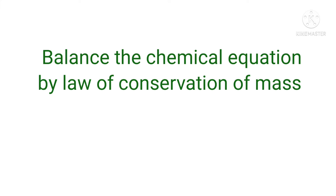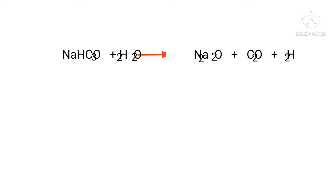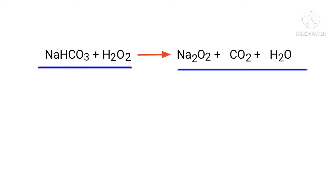Balance the chemical equation by the law of conservation of mass. Sodium bicarbonate plus hydrogen peroxide gives us sodium peroxide plus carbon dioxide plus water. In this equation, the reactants are sodium bicarbonate and hydrogen peroxide, and the products are sodium peroxide, carbon dioxide, and water.